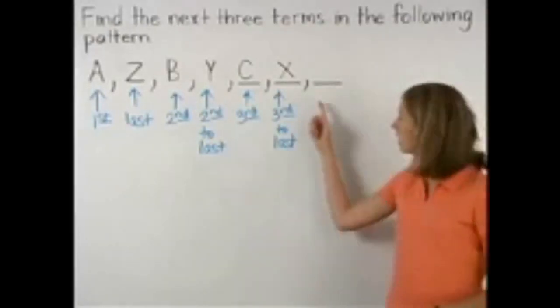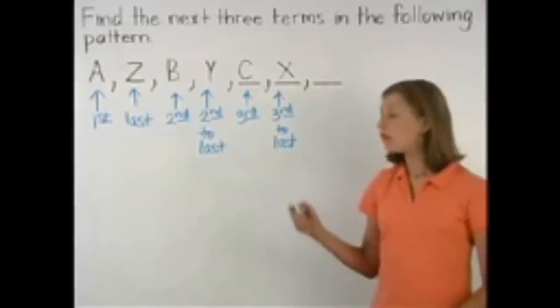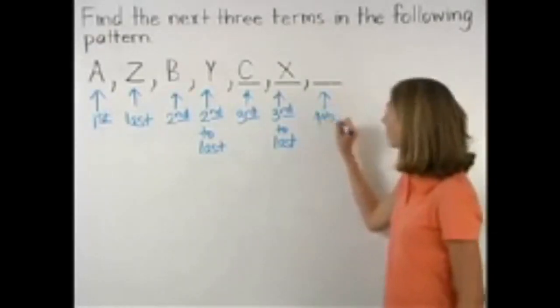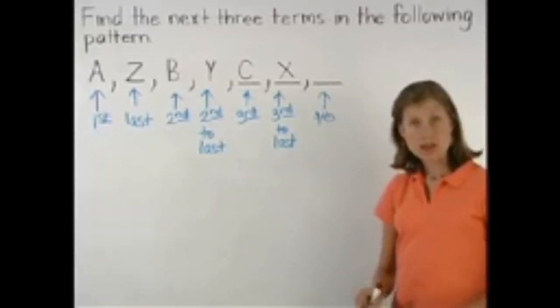Finally, the last missing term should be the fourth letter of the alphabet. The fourth letter of the alphabet is D.